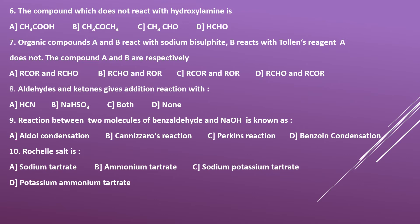Options B and C can be eliminated — B has aldehyde and ether, C has ketone and ether. Options A and D have ketone+aldehyde and aldehyde+ketone respectively. Since B reacts with Tollen's reagent and aldehydes respond to Tollen's reagent whereas ketones do not, A is ketone and B is aldehyde. Hence option A is the right answer.